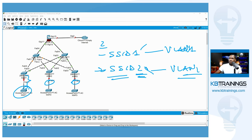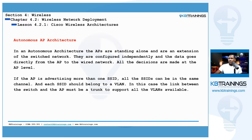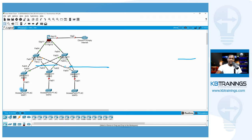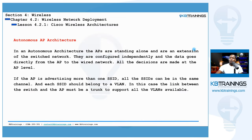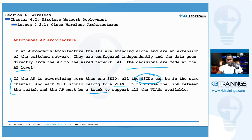That's basically what an autonomous AP architecture is. The APs are configured independently. Data goes directly from the AP to the wired network, so the wireless access point is like an extension of your switched network — it's just broadcasting wirelessly in the air. All decisions are made at the AP level because there is no other device involved. That's what I was referring to with the trunk links and multiple VLANs for multiple SSIDs.